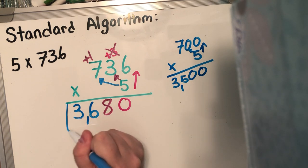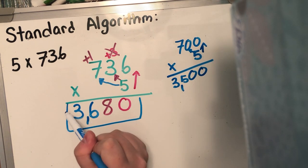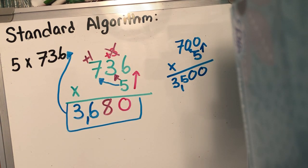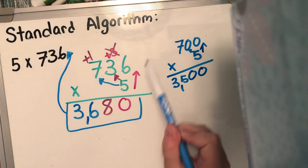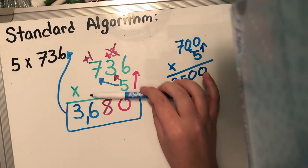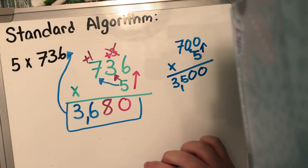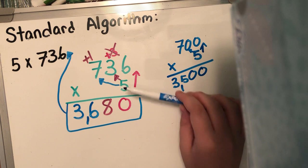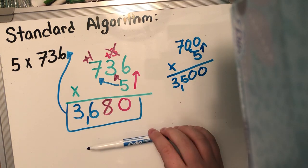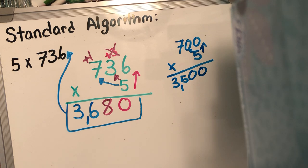Altogether it's gonna be 3,680. So the product of five times 736 is gonna be 3,680. Remember in standard algorithm, we go up, across, and across — we just put down the numbers as we go along. We are not gonna have multiple numbers down here. It's one straight line when we're dealing with multi-digit by one digit. When we get into double digit, we'll have a second row, an additional row when we start adding things together.